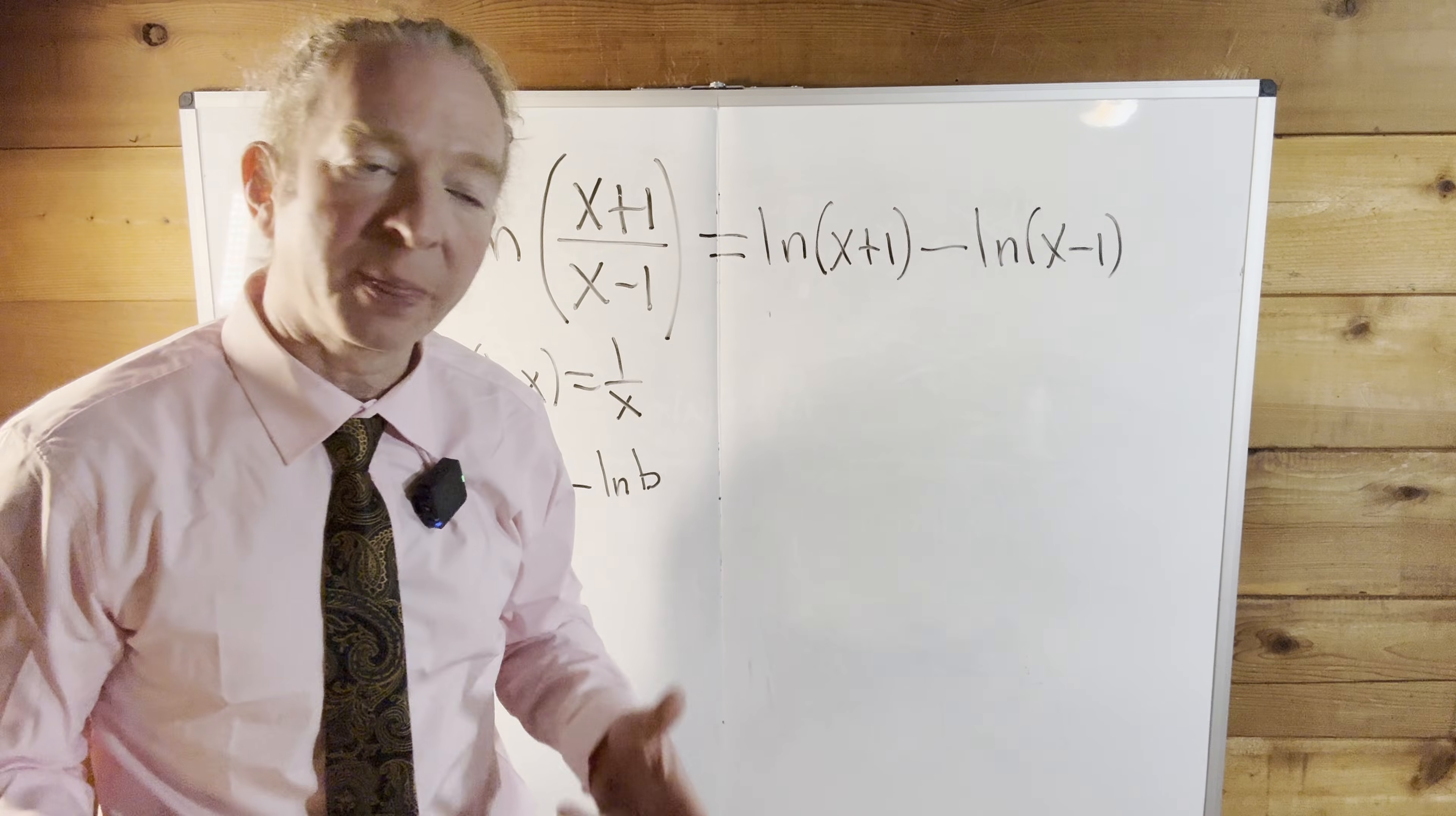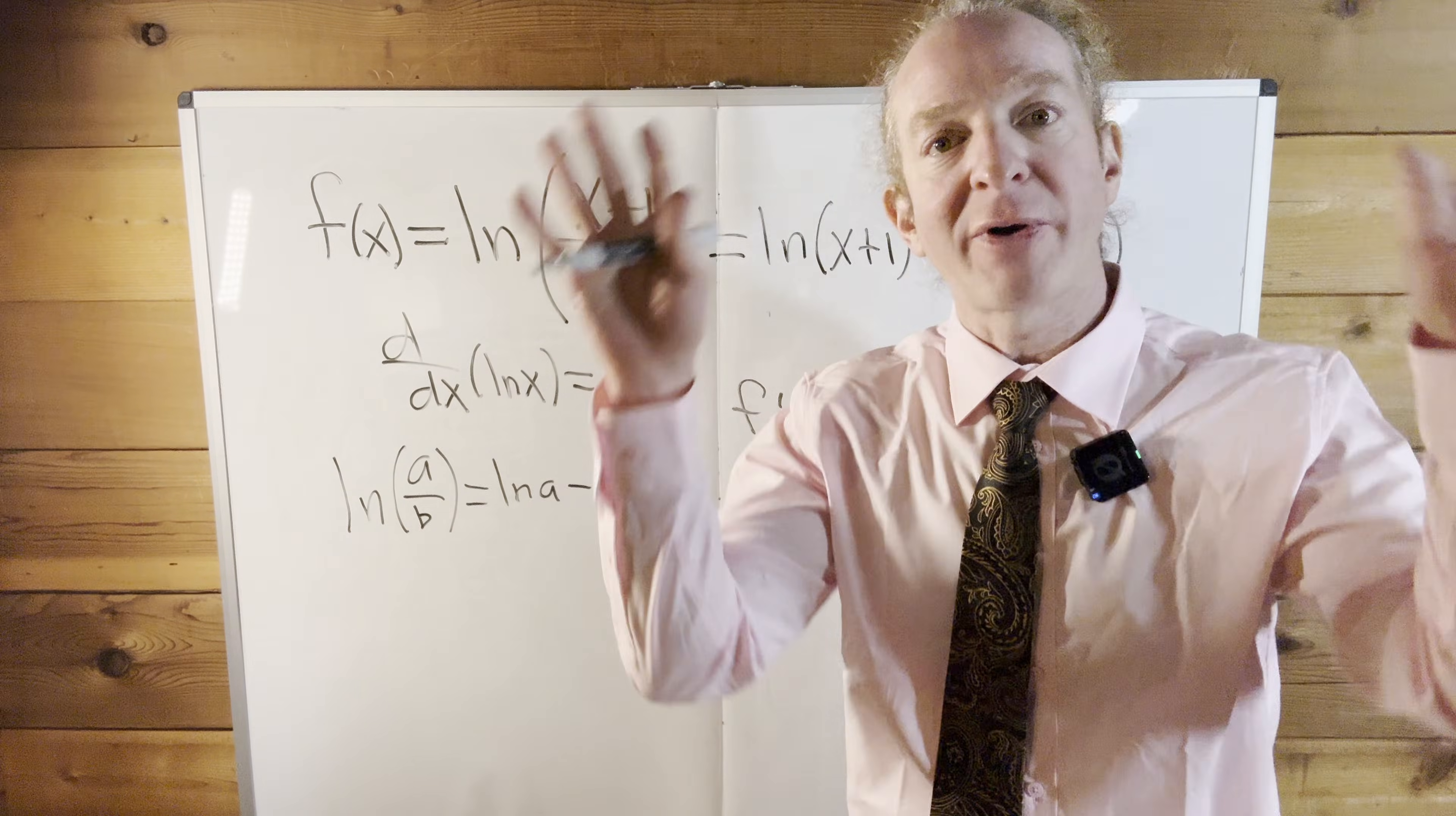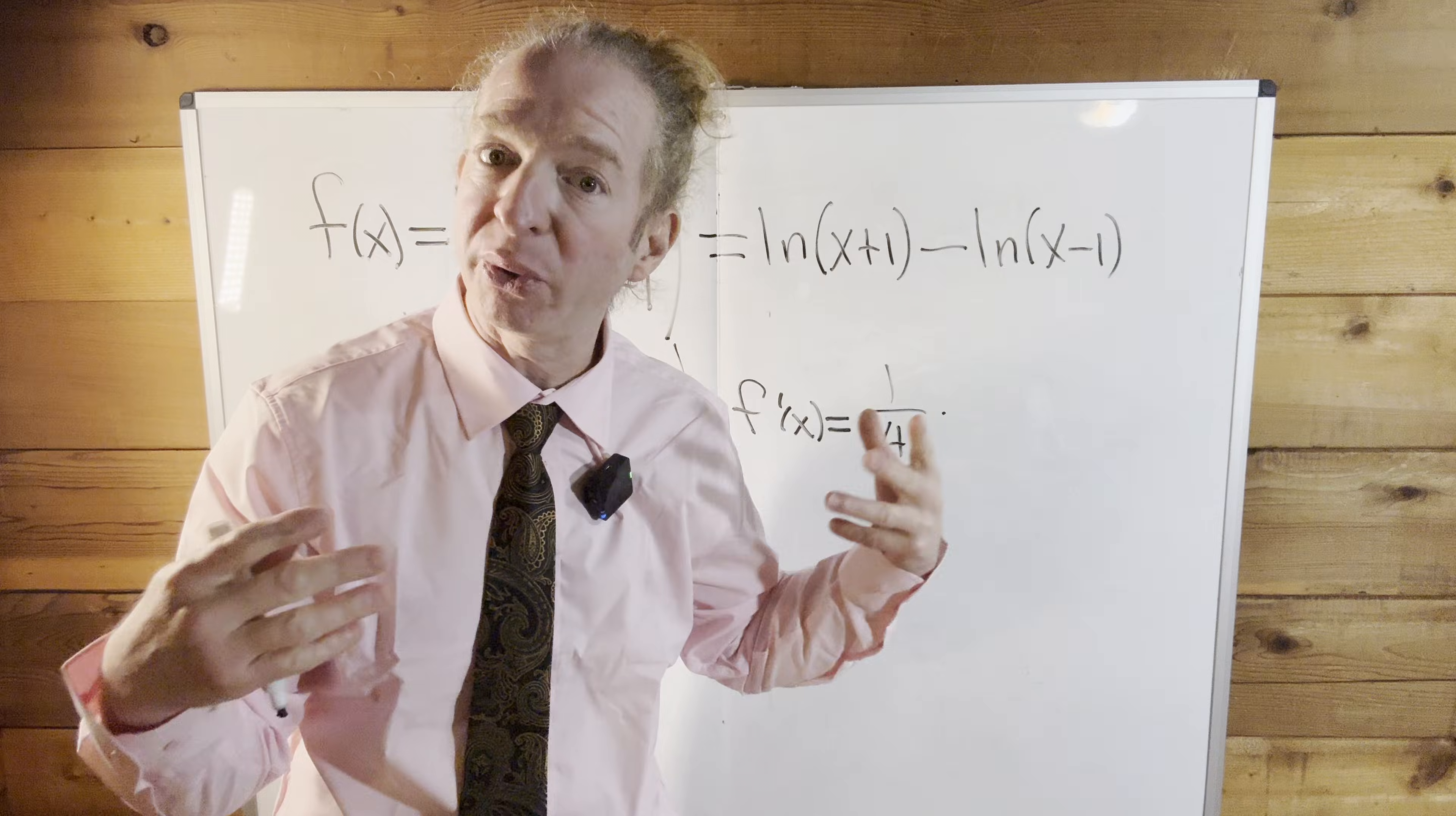So we have to use the chain rule. So taking the derivative, the derivative of the natural log of x plus 1 is going to be 1 over x plus 1 times the derivative of the inside function. The inside function in this case is x plus 1, so its derivative is simply 1.